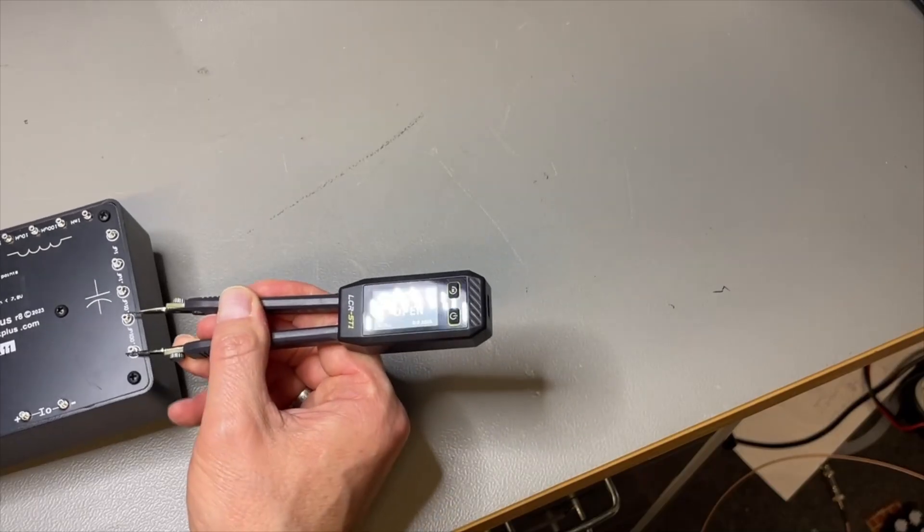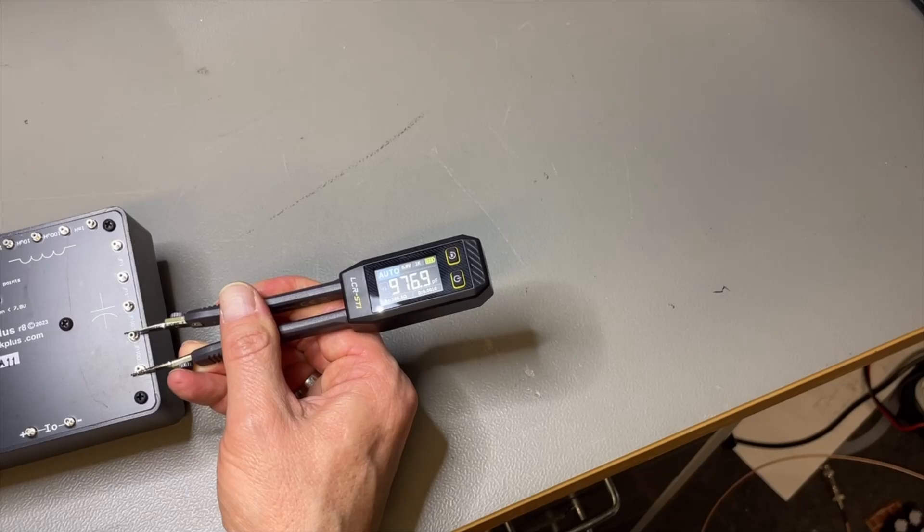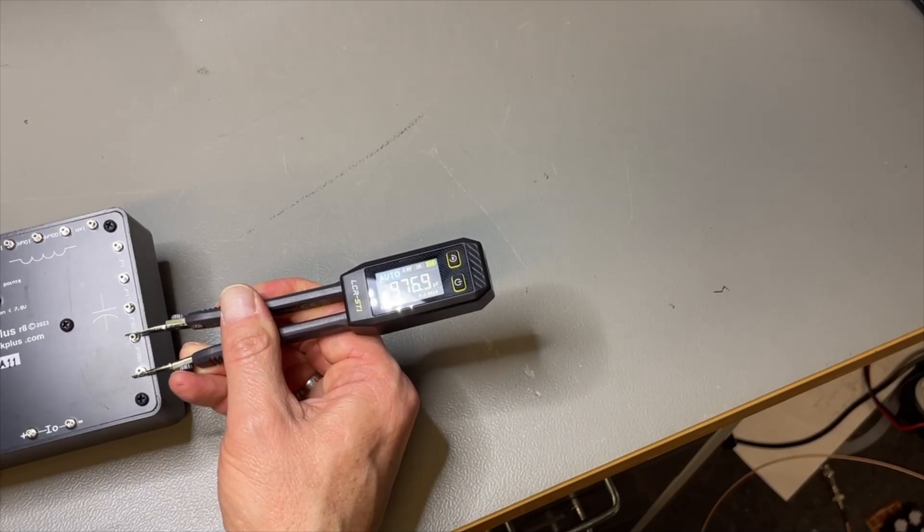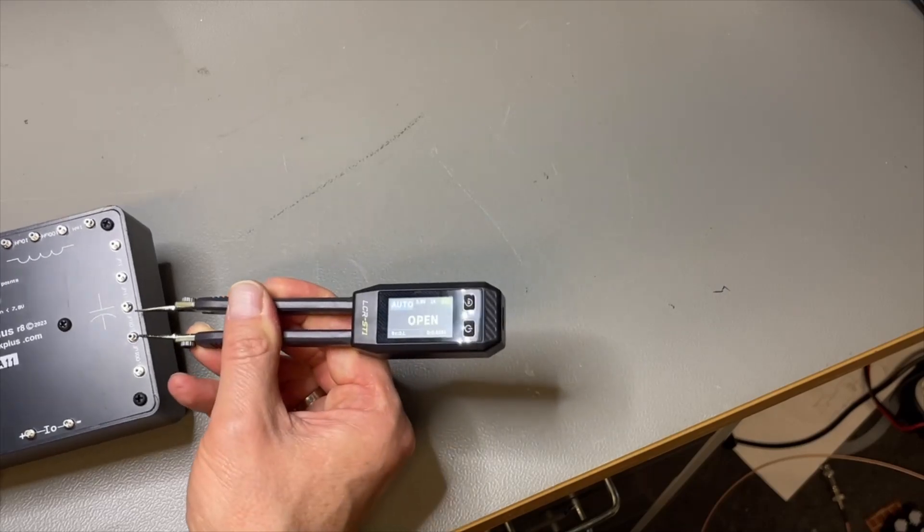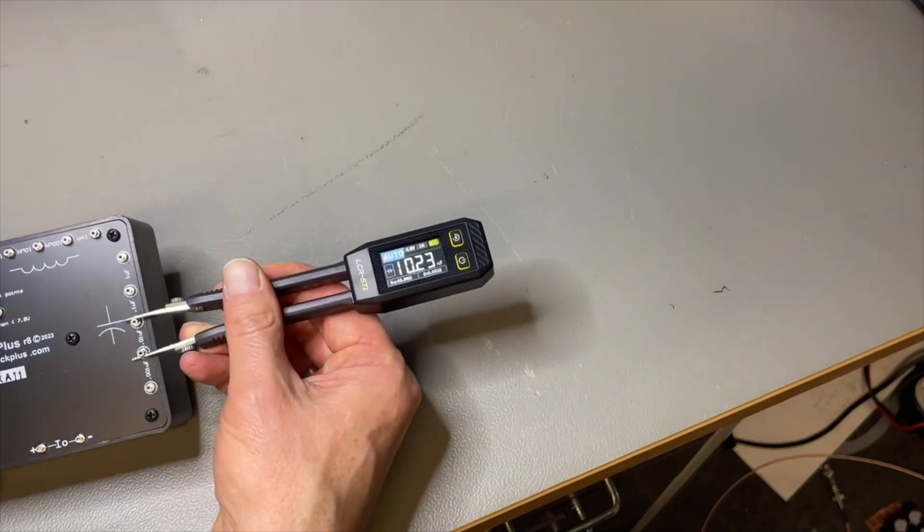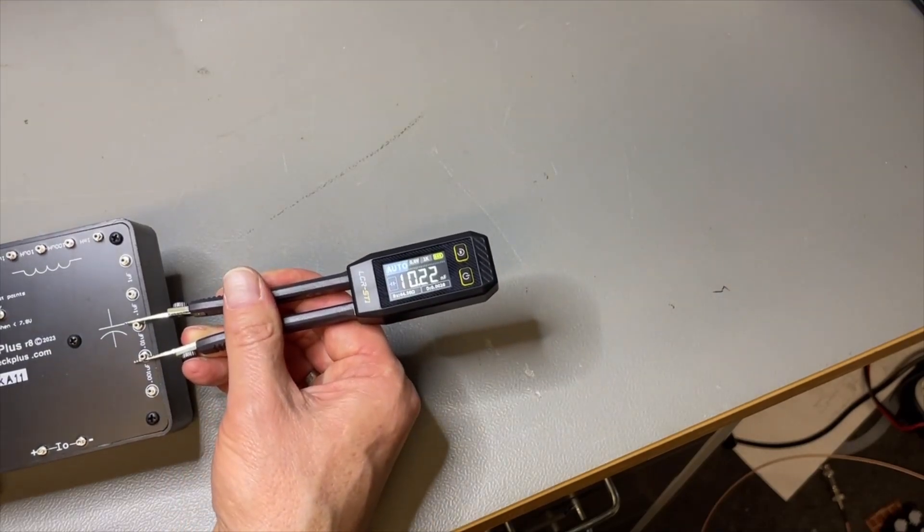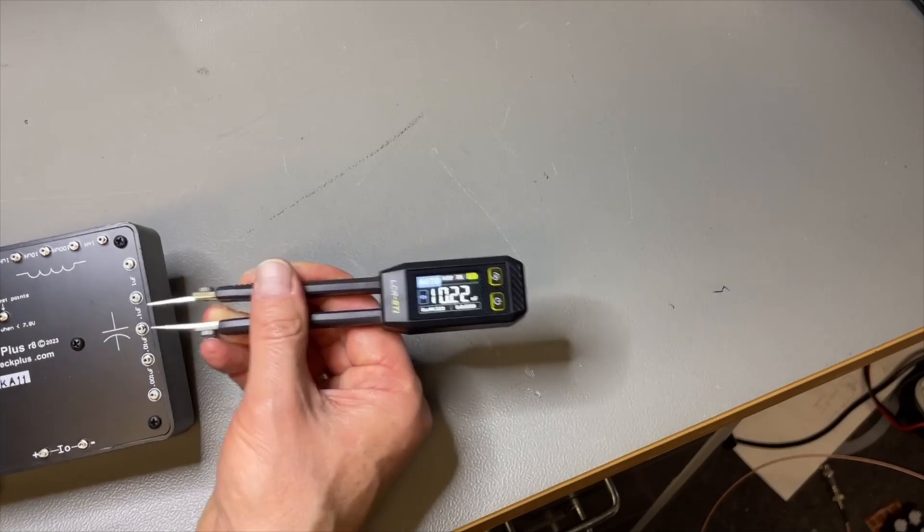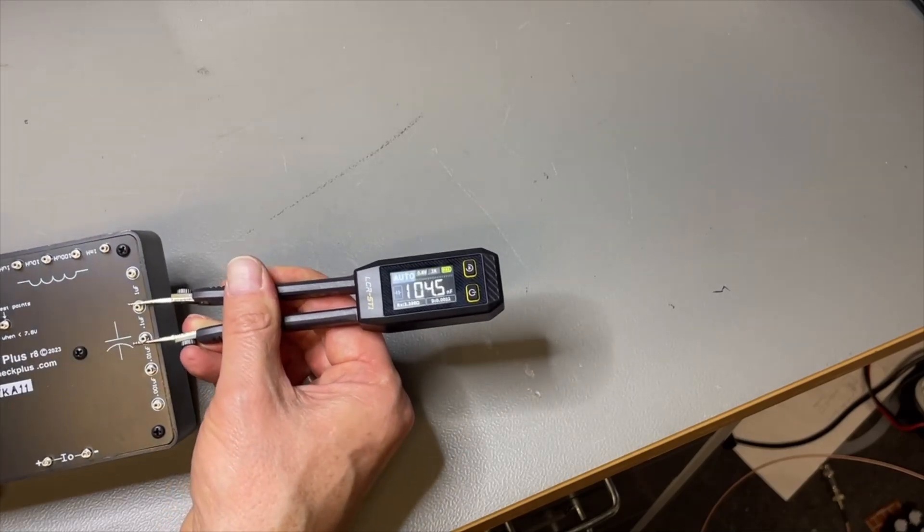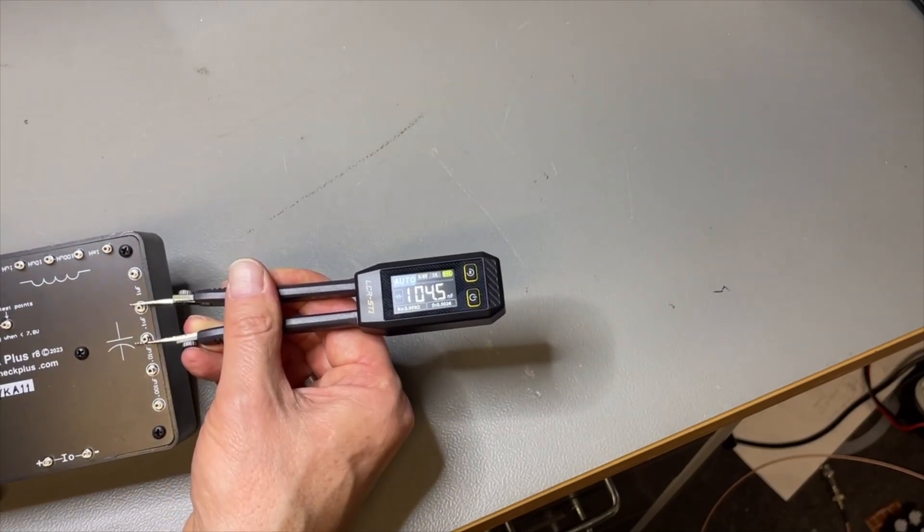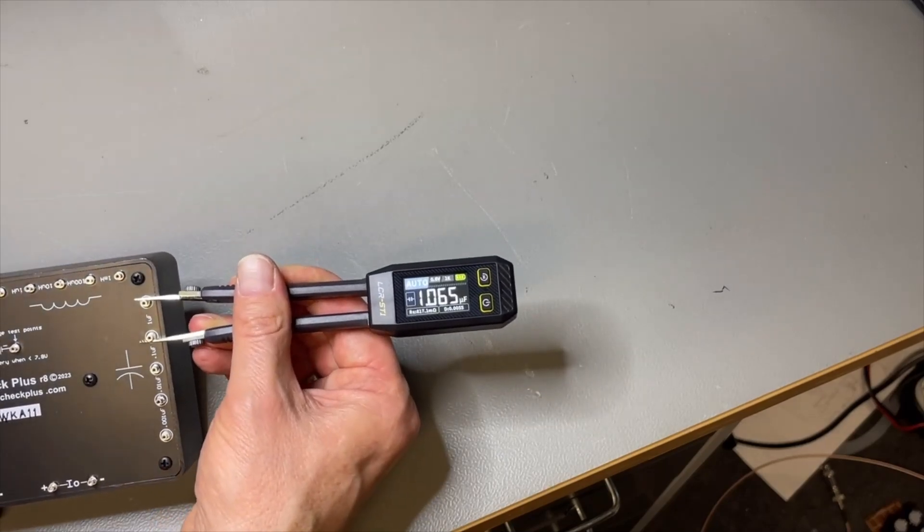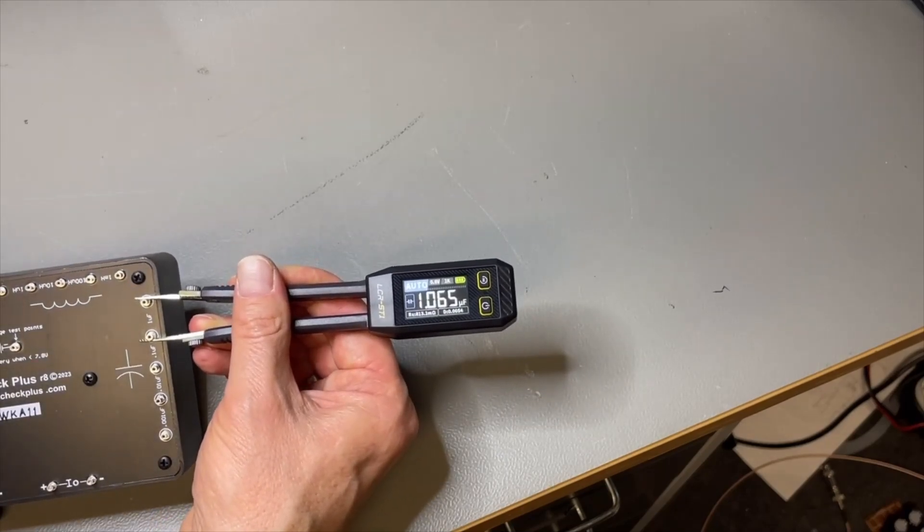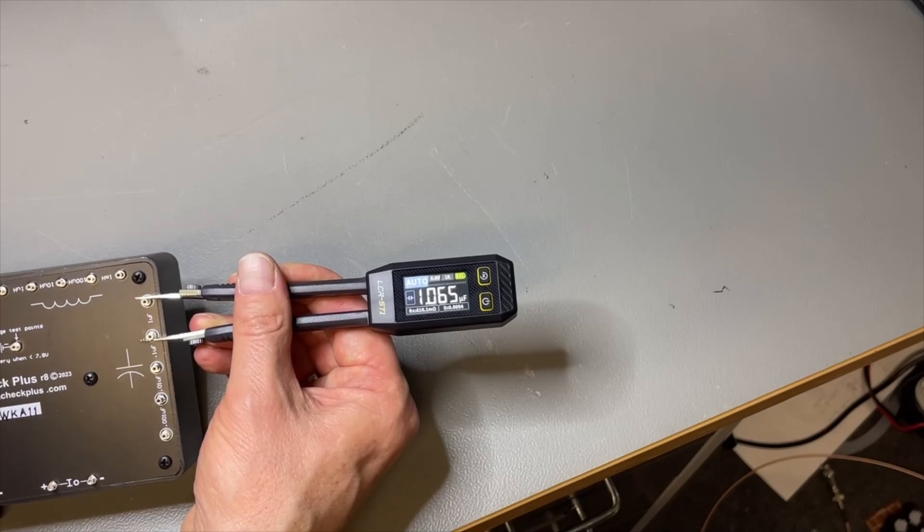Some caps. We start with one nano. They have 677 picos. This is 10k. And one micro. And it's all in auto mode.